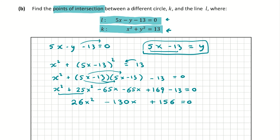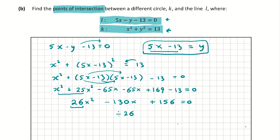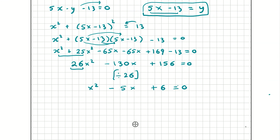Now let's simplify. The smallest coefficient is 26, and we check: 130 ÷ 26 = 5, and 156 ÷ 26 = 6. So dividing everything by 26 gives: x² - 5x + 6 = 0. Now we have a quadratic we can solve to find two values for x.